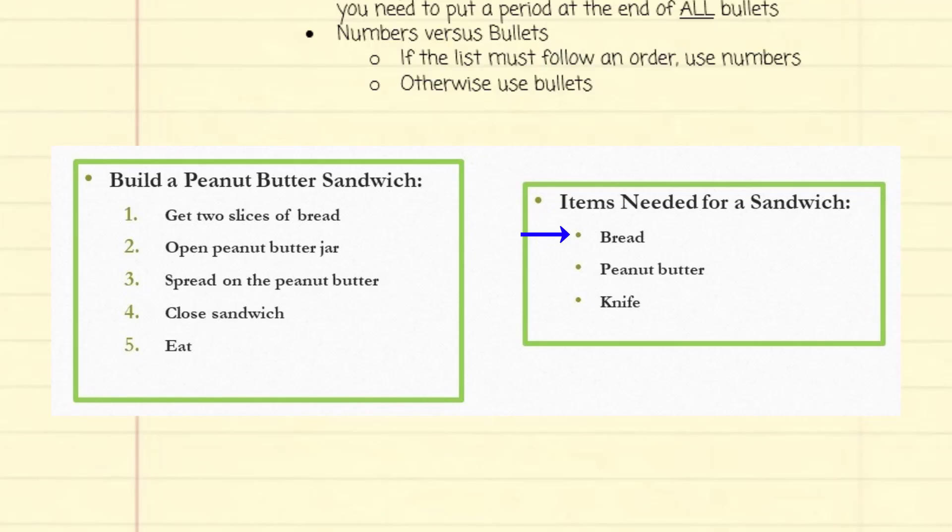See this example to build a sandwich has a very specific order to the steps, but the items needed is just a list requiring only bullet points.